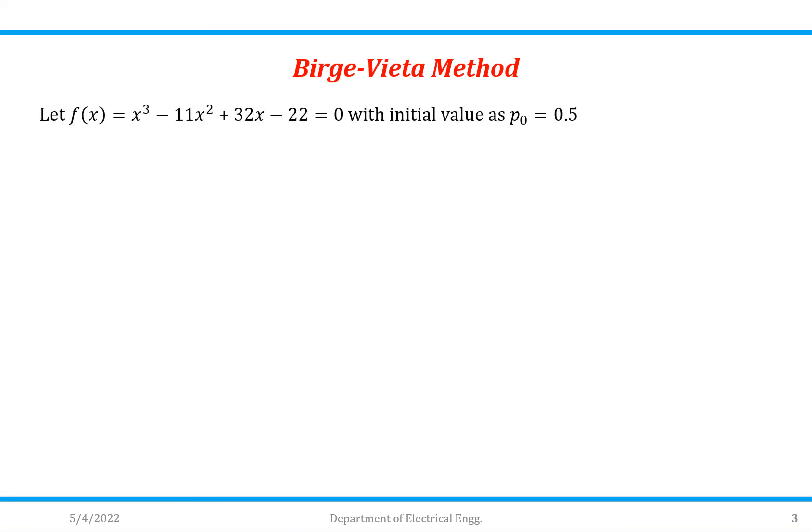Let us consider the example: f(x) = x³ - 11x² + 32x - 22 = 0 with initial value as p₀ = 0.5.